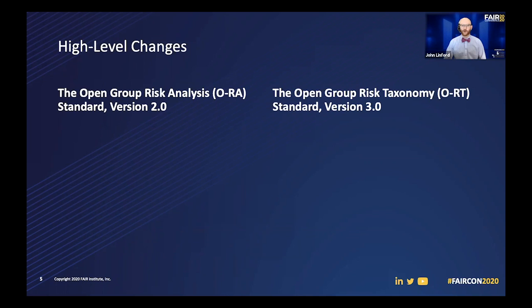A little bit of background about how these documents were originally developed. We had the Open Group Risk Taxonomy Standard ORT come about first. From that document, we then developed the Open Group Risk Analysis document. Based on developing that document, ORT was then updated to version 2. So they were never really developed side-by-side until this time round with this update. We made a very concerted and deliberate effort this time to make sure that changes made to one document were made consistently in the other, and to avoid any redundancy or repetition between the two documents.